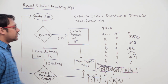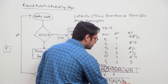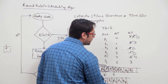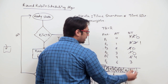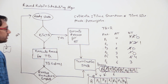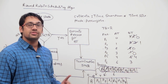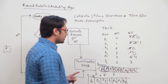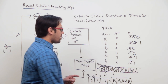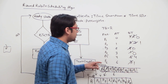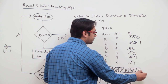The next process is P2, and the burst time of P2 is 3. We execute P2 for 2 units of time until time unit 13, and its burst time becomes 1. Since it is not finished, we put P2 back in the ready queue. The next process is P6, with burst time 3, which is not less than the time quantum. We execute P6 until time unit 15 and its burst time becomes 1. Since it is not finished, we put P6 back in the ready queue.